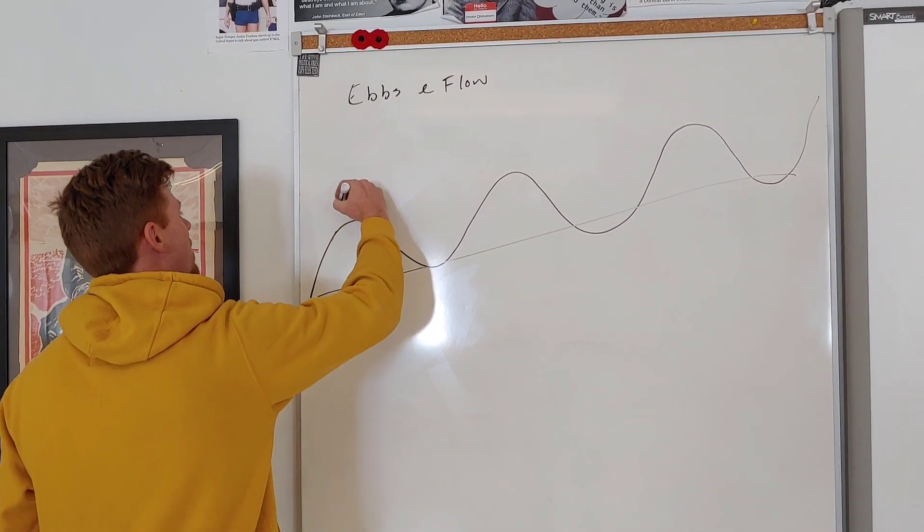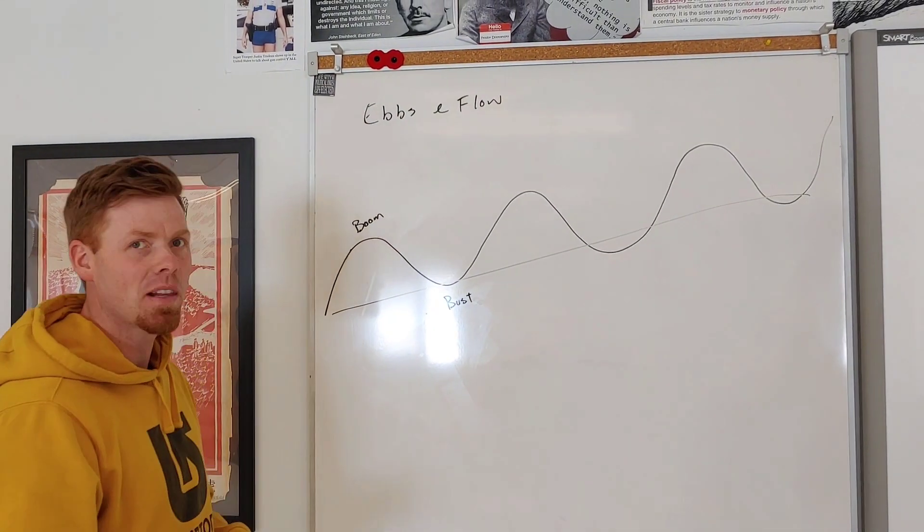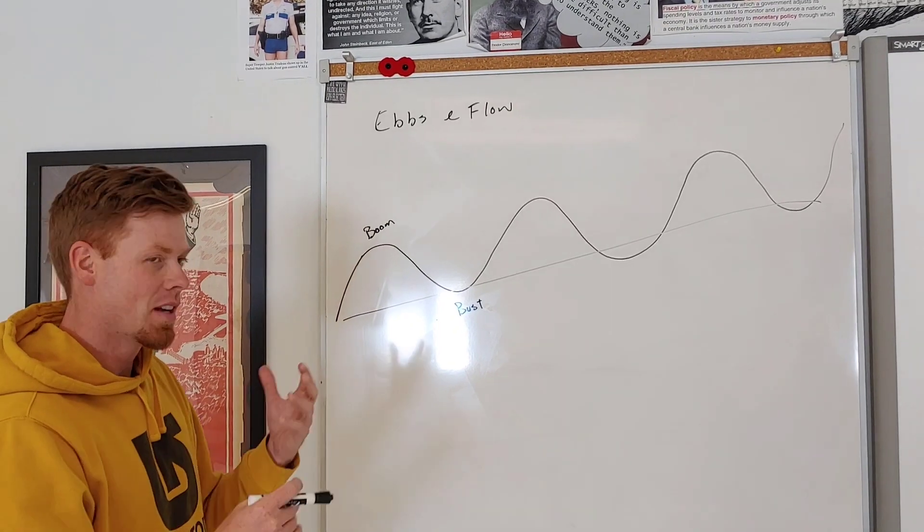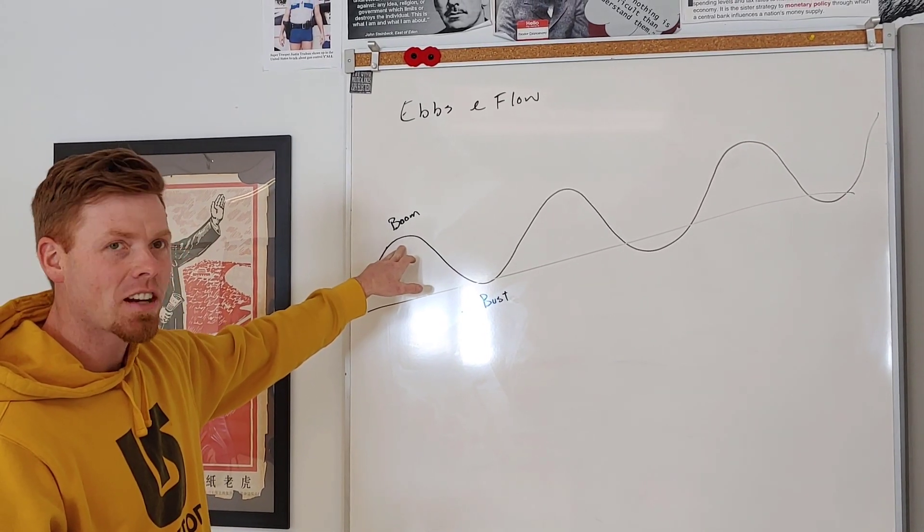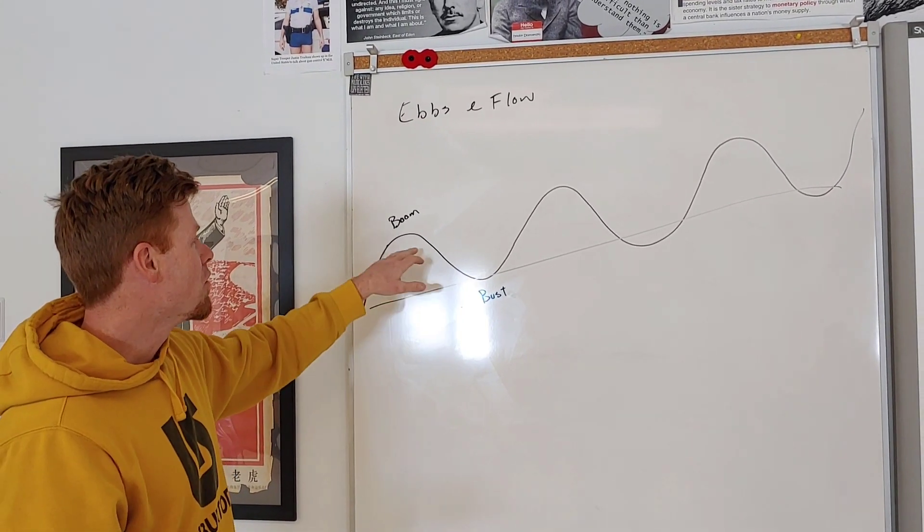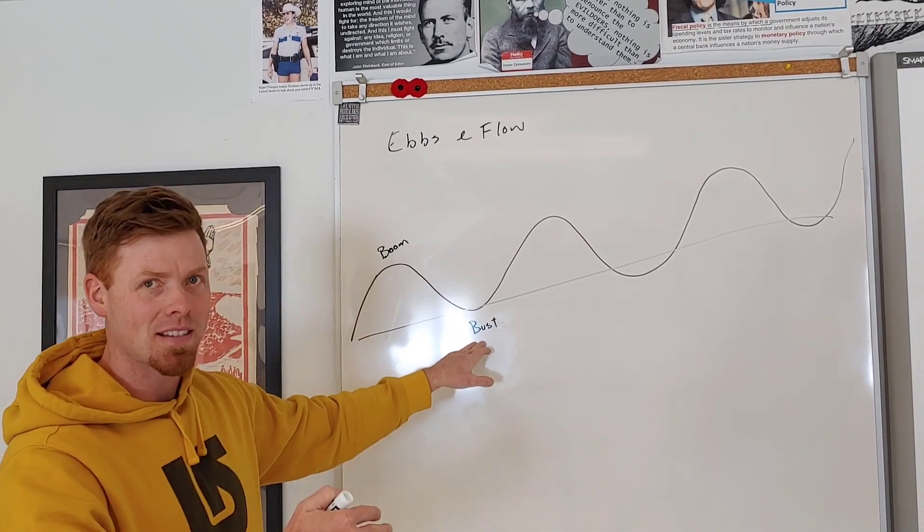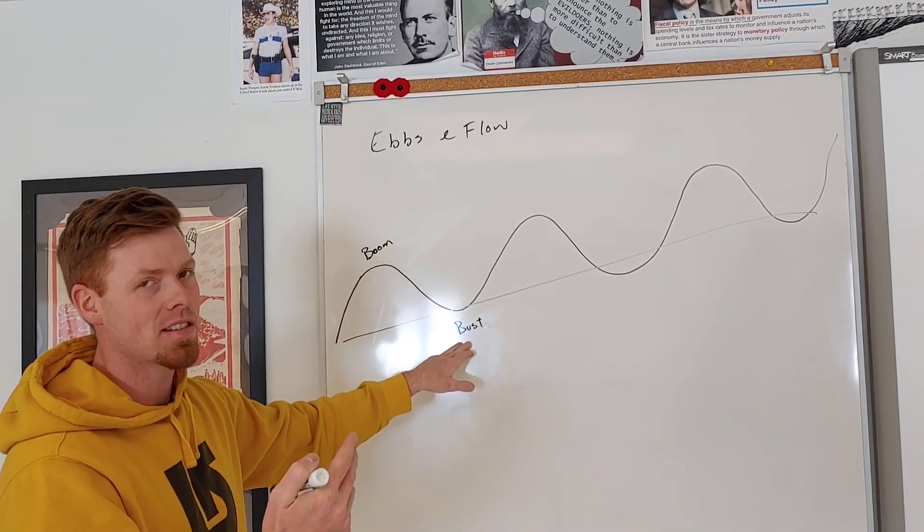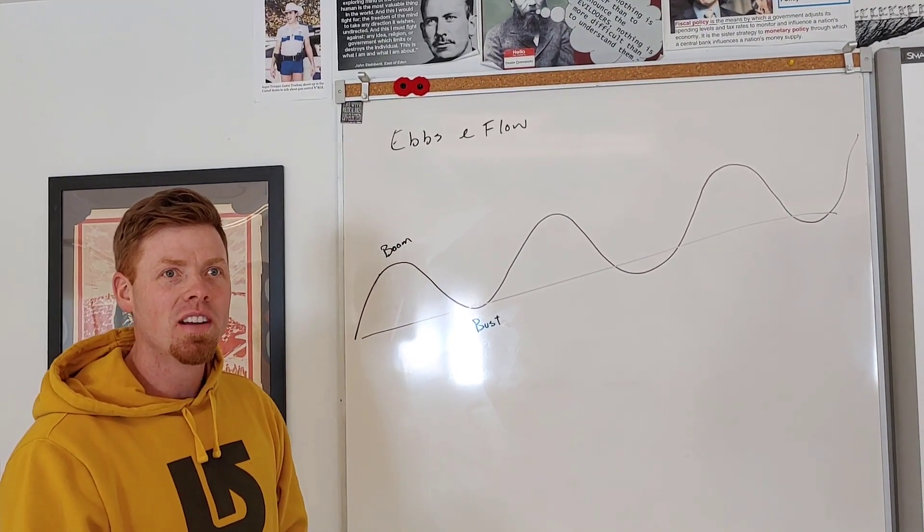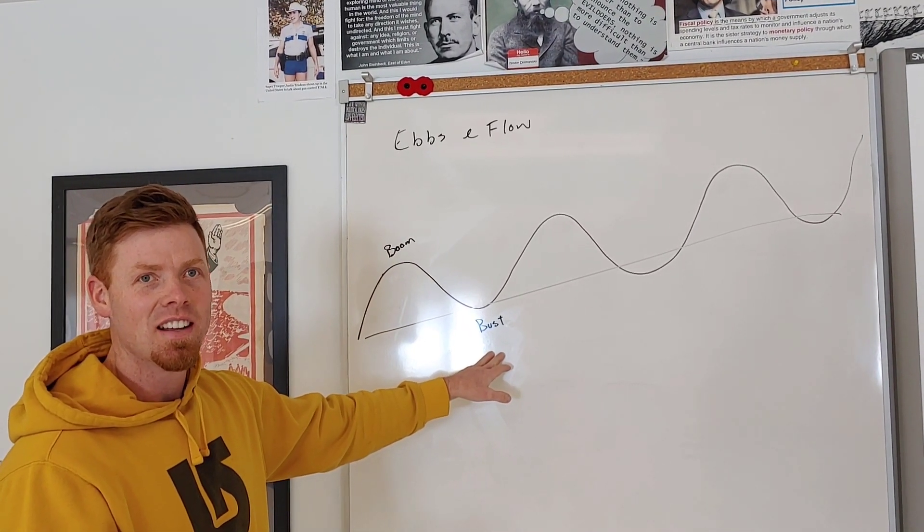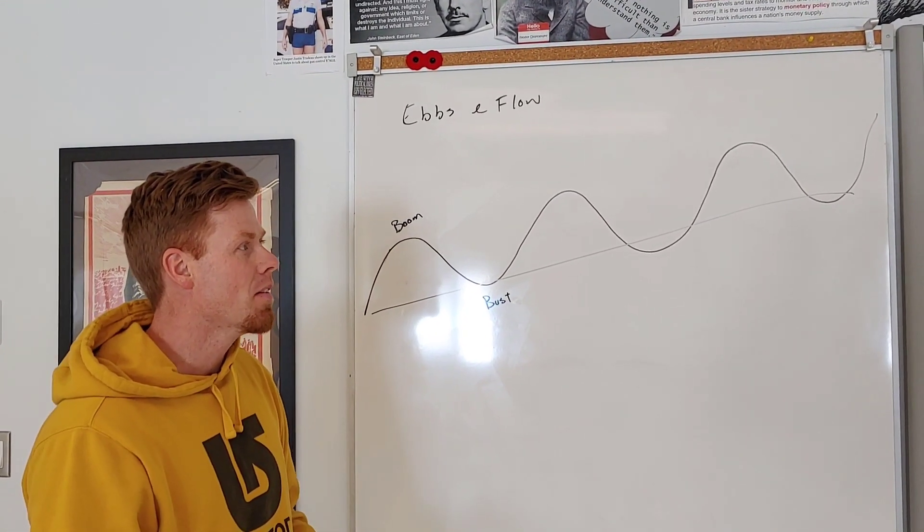When things are good, we call this a boom. And when things are bad, we call this a bust. A capitalist would say when things are good, because capitalism believes in individualism, you should save and protect yourself against a bust. If you save your money now, when a bust happens, you'll be okay. That's the best time to invest in building your business or investing in stocks. But the idea is that it's not anybody's fault but your own if in a bust cycle you have no money.